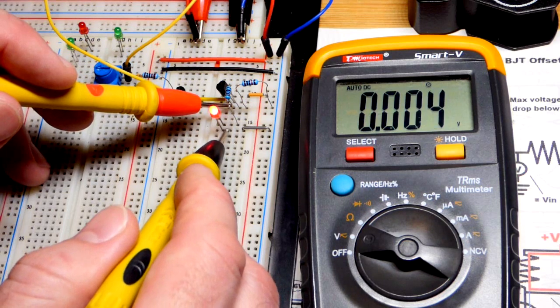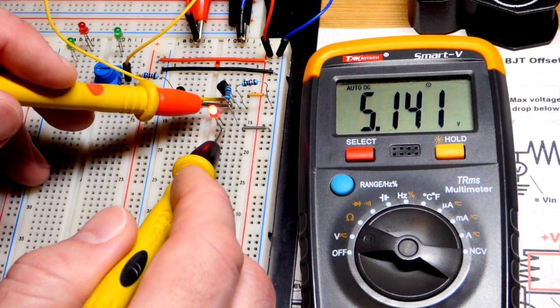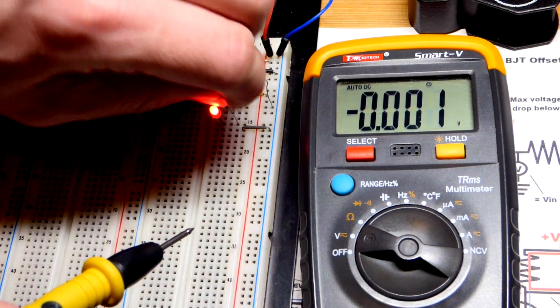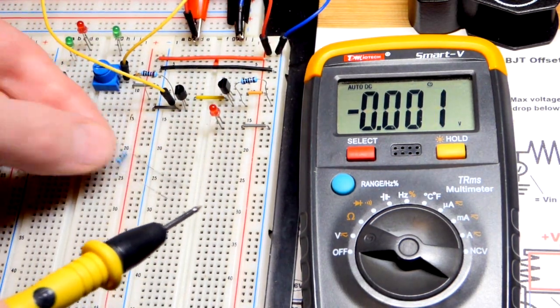So that's across the load, the resistor and the LED, and it holds that voltage even as the load changes.